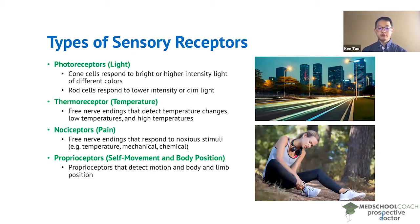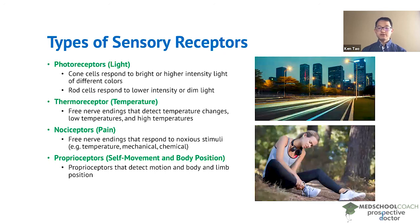At the same time, you're also able to detect body positions. That's why if you close your eyes, you're able to take your finger and touch your nose. Even though you can't see yourself, because of your proprioceptors that allow you to detect body and limb position, you're still able to execute basic tasks like touching your nose without vision.